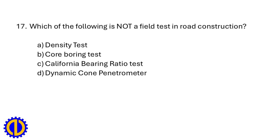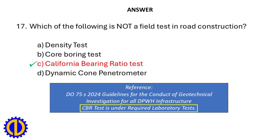Which of the following is not a field test in road construction? a. Density test, b. Core boring test, c. California Bearing Ratio test, d. Dynamic Cone Penetrometer. Answer: c. California Bearing Ratio test. Reference: DO 75 2024 Guidelines for the Conduct of Geotechnical Investigation for all DPWH Infrastructure — CBR Test is under Required Laboratory Tests.